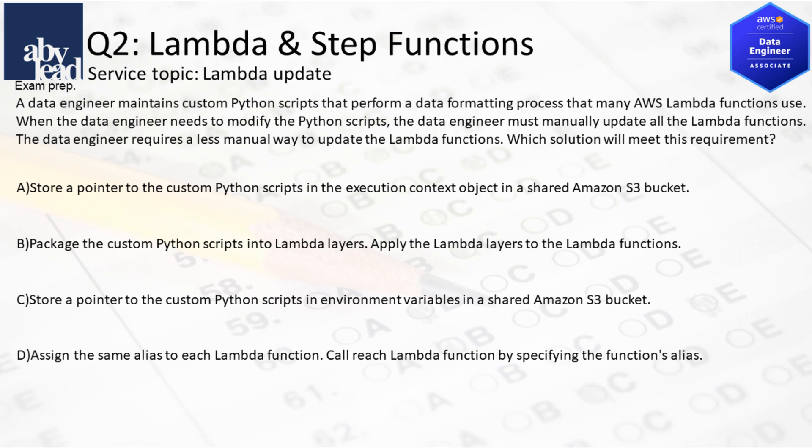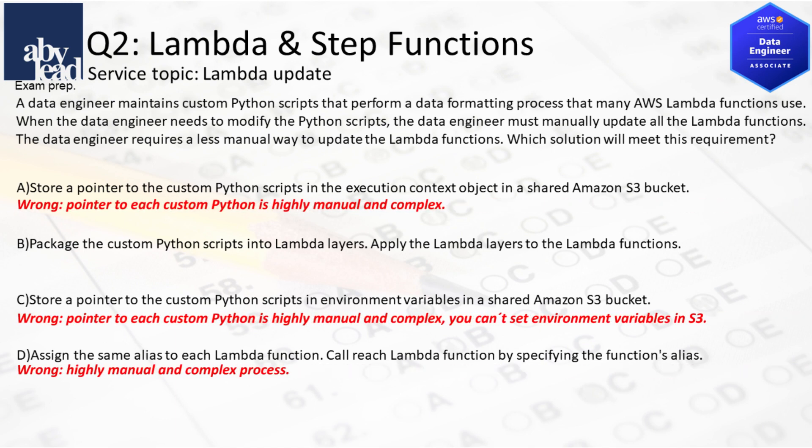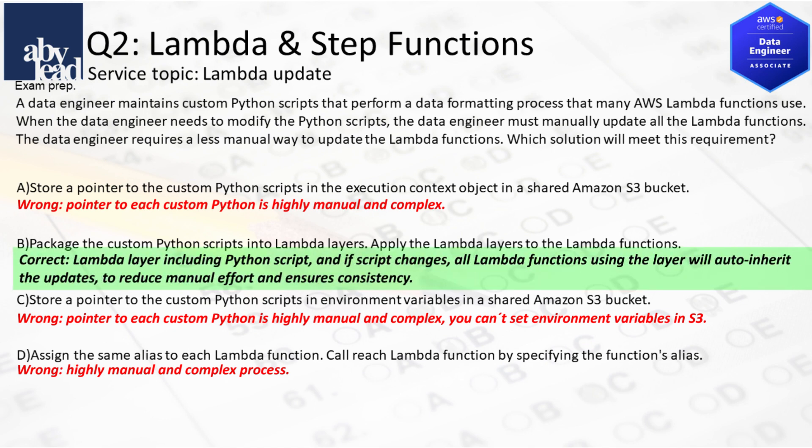Question 2: How do you efficiently auto-update Lambda functions with custom Python scripts for data formatting? Pointing to each custom Python script is impractical. Besides, you can't set environment variables in S3. In contrast, a Lambda layer including the latest Python script is used by all Lambda functions to auto-inherit the updates.